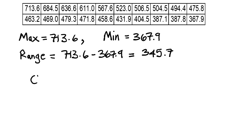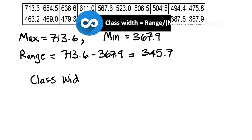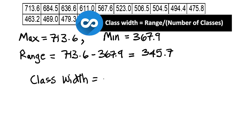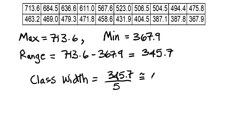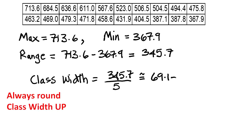The class width is the range divided by the number of classes, so that's 345.7 divided by 5. It's not going to be a nice whole number — it's going to be about 69.14. But we always round this up, so we're going to round it up to 70.